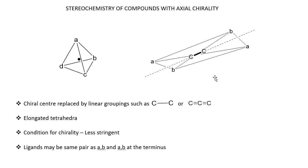For such an elongated tetrahedron system in which axial chirality is based, the condition for chirality is less stringent. It need not have all four ligands different, as in molecules with a chiral center. You can have the same pair of ligands at both ends — for example, AB and AB at both ends of such systems.